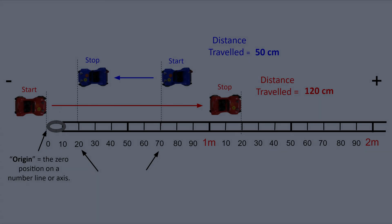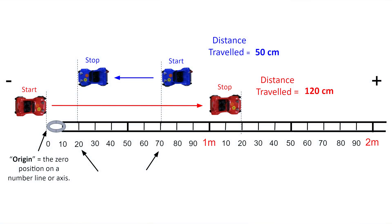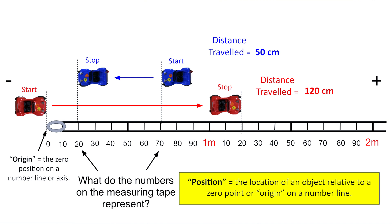While discussing how distance can be measured using a meter stick or metric measuring tape, ask students what the numbers on the measuring device represent. Do they represent the distance traveled or something else? Through discussing a couple of examples, it should be clear that the meter stick is measuring the position of the object, the location of the car relative to some zero point or origin on a number line. Position is what is being directly measured using the measuring tape or meter stick, not distance traveled.